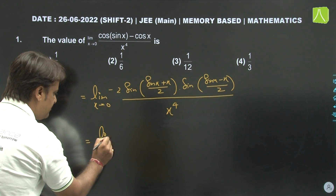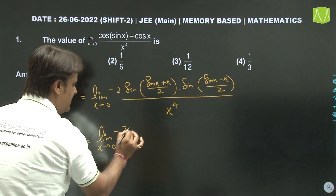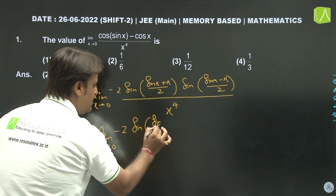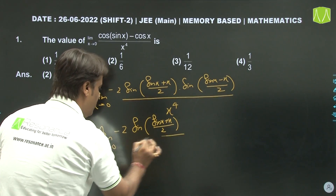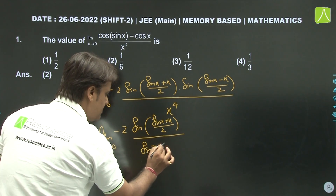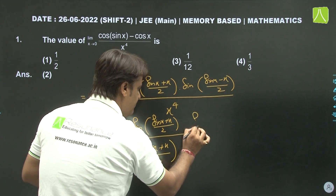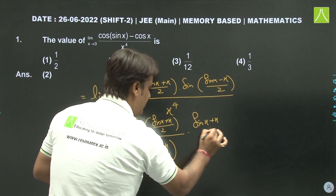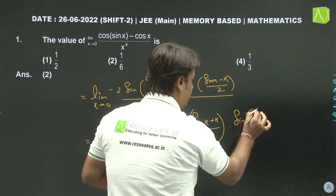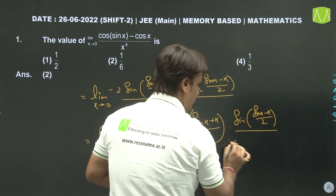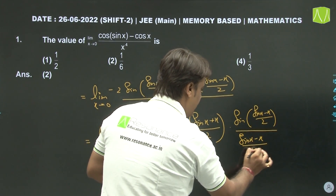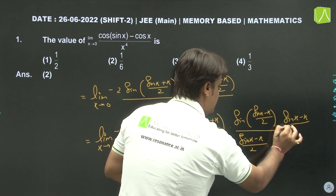This equals limit x tending to 0, minus 2 times sin((sinx+x)/2) over (sinx+x)/2, multiplied by sin((sinx-x)/2) over (sinx-x)/2. Now we multiply and divide appropriately to bring the expression into sin(0)/0 format. Both standard limit factors approach 1.